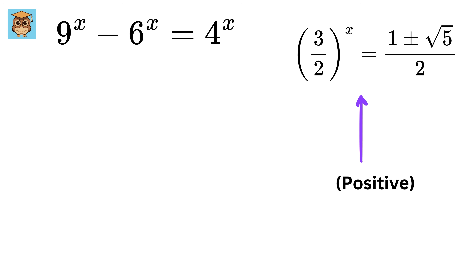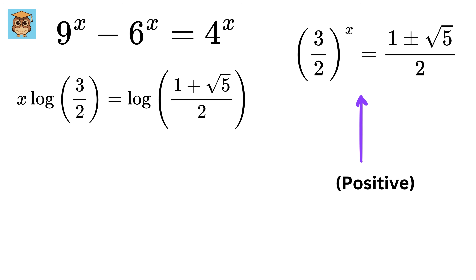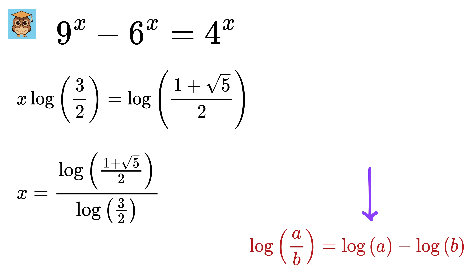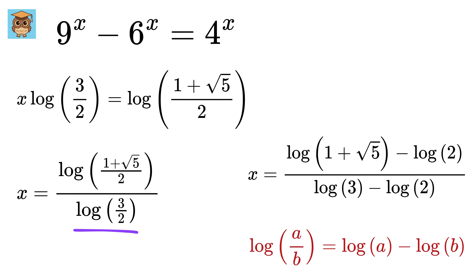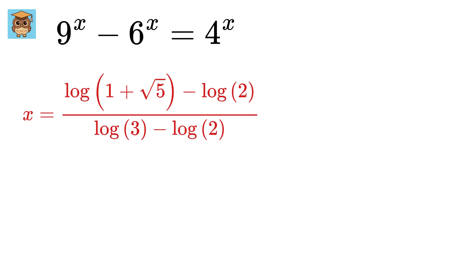Now consider this equation. Again, take log on both sides to get x times log 3/2 equals log of this. So x equals this over this. Using the property of log, it becomes log of (1 plus root 5) minus log 2, divided by log of 3 minus log of 2. You can leave your answer like this, or find its decimal value, which turns out to be 1.187.